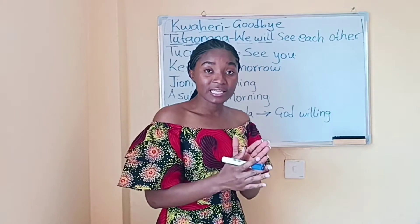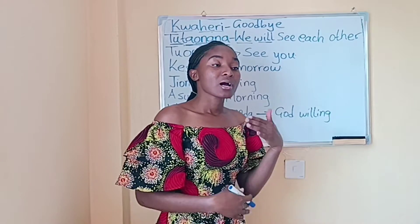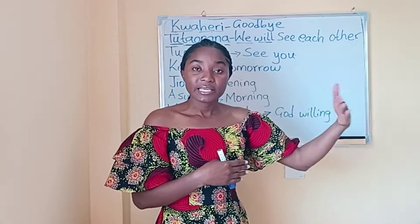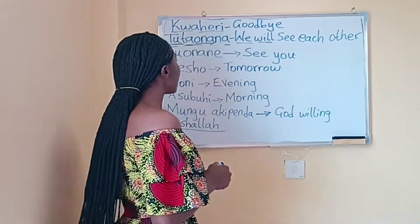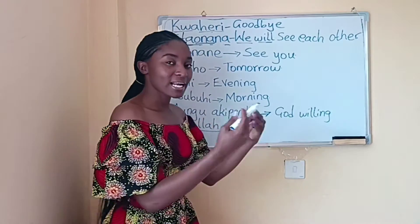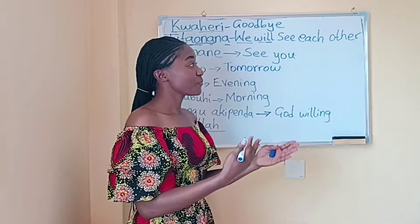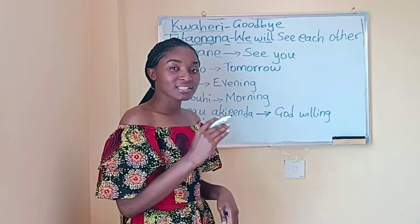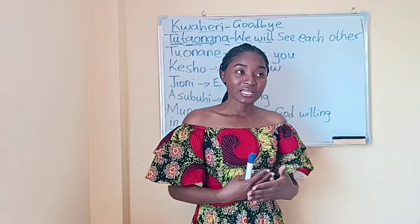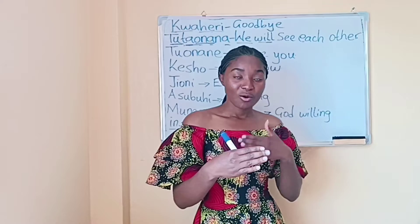We use future tense because you're not seeing each other again immediately — it might be the evening or the next day. In Swahili we use 'ta' to indicate future tense. We say onana rather than ona because you're seeing each other — not just yourself alone, you must be two people or more. So you can combine: kuahiri, tutaonana — goodbye, we will see each other.